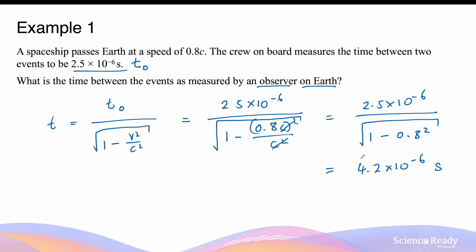The time recorded by the stationary observer on Earth who is observing the motion of the spaceship is longer than the time recorded by an astronaut or crew member in the same inertial frame of reference as the moving spaceship at 0.8c.